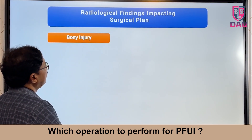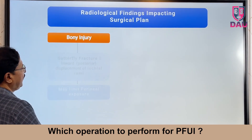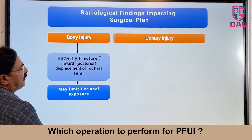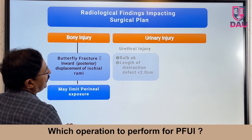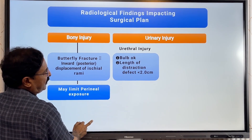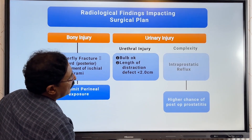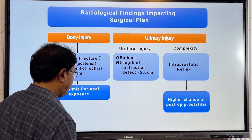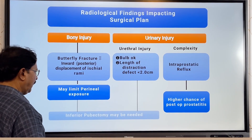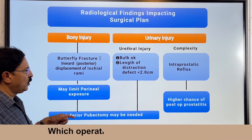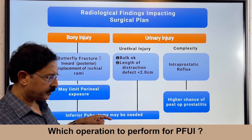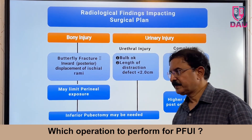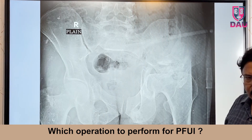This may look like a very easy surgical case, but remember this patient had compromised blood flow in the pudendal artery on one side. Even with technically good anastomosis, compromised pudendal circulation can give a poor result. You can prognosticate the outcome before actually performing the operation. Summary: butterfly fracture may limit perineal exposure; bulb is okay; defect length less than 2 centimeters; intra-prostatic reflux raises chance of post-operative prostatitis. You may or may not need inferior pubectomy.